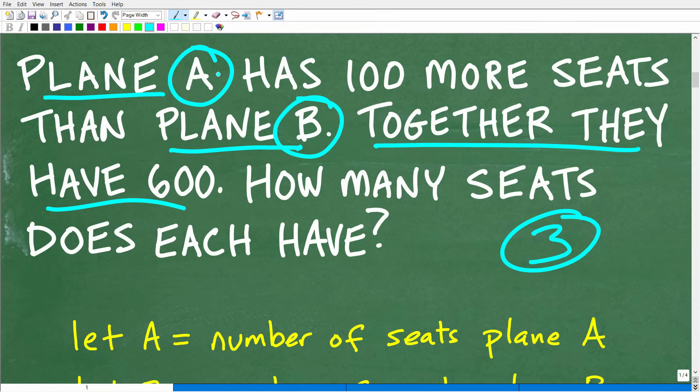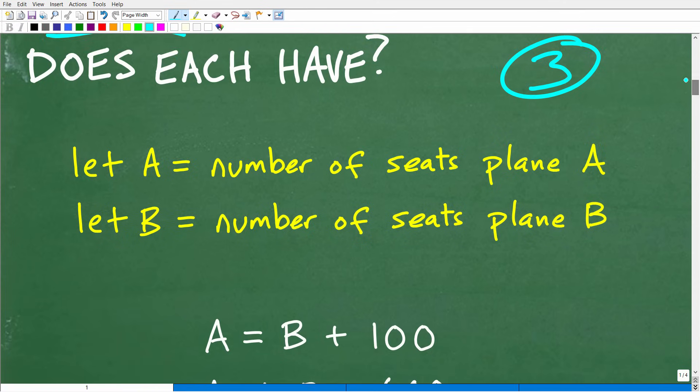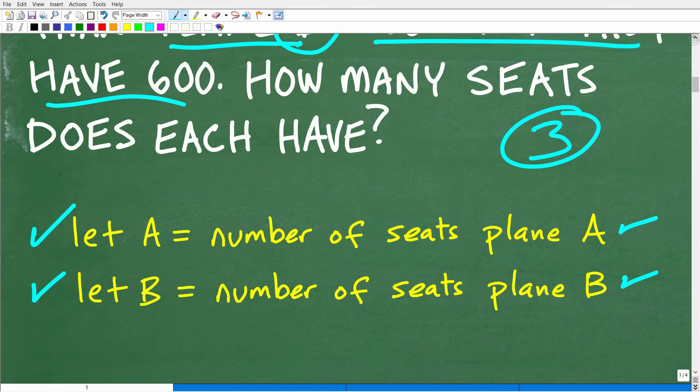So what we're going to need here is some sort of model. But really what we need to do is model what's going on here algebraically. And again, when we have two unknown values like plane A and plane B, it's a good idea to use variables to say, hey, let's let A equal the number of seats for plane A. And let's let B equal the number of seats for plane B, because if we can find the values of A and B, we are going to in fact answer the question.